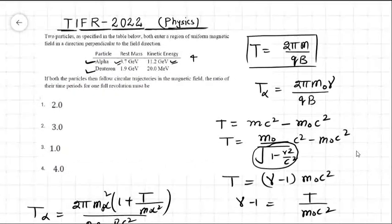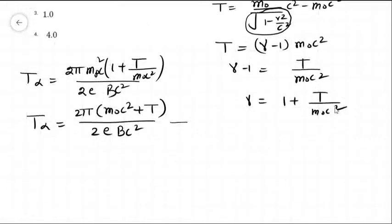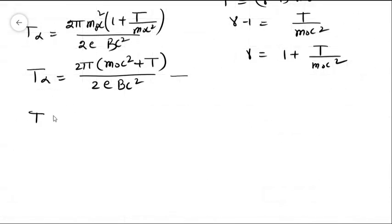Now let us calculate the time period for the deuteron. We see here the rest mass energy is much greater than the kinetic energy, so relativistic effect will not be applicable. We can write the expression T_d equals 2πMd divided by charge on deuteron e into B. We can multiply and divide by c².